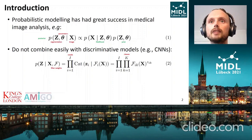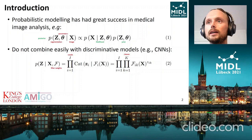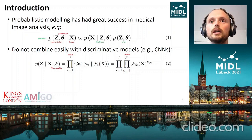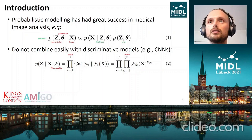In the last few years, these models have been outperformed by discriminative CNNs. However, writing a CNN as a product of categorical distributions shows its incompatibility with the previous formulation — it does not fit the mold of likelihood and prior, as it directly models the posterior.